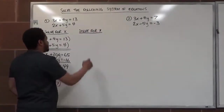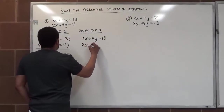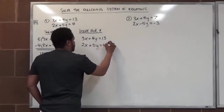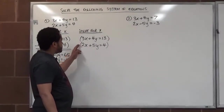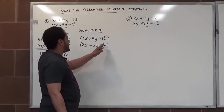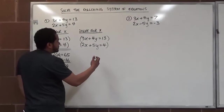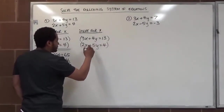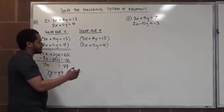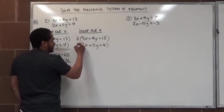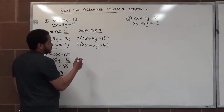Starting over with the original equations: 3x plus 4y equals 13, and 2x plus 5y equals 4. This time I want to cancel the x's. The LCM of 2 and 3 is 6. I'll multiply the top line by 2 and the bottom line by 3, making them equivalent but not opposite — so I'll make the bottom line negative.